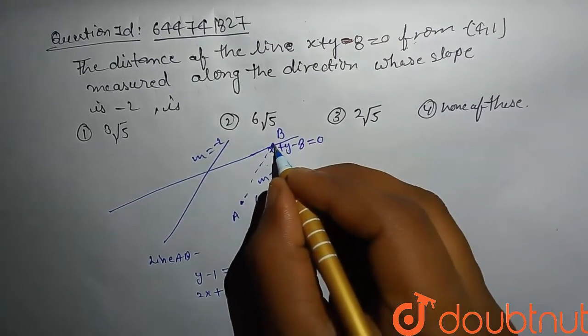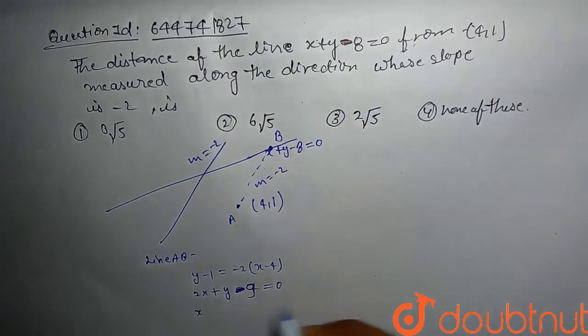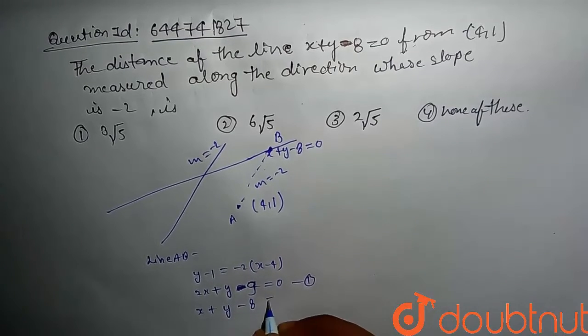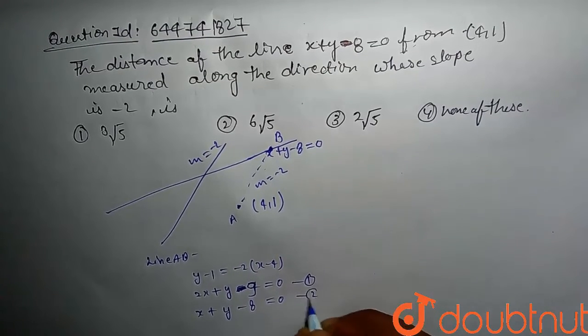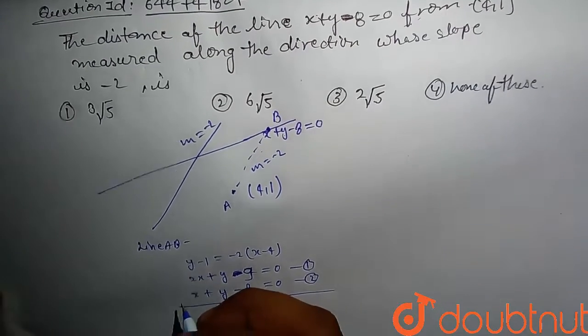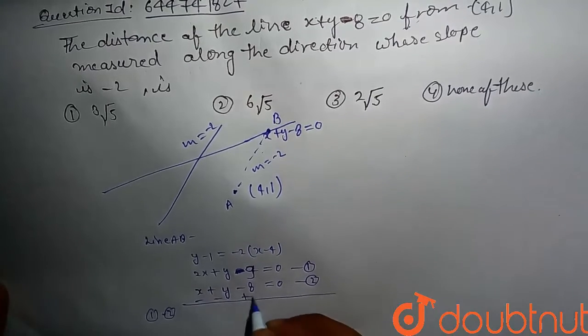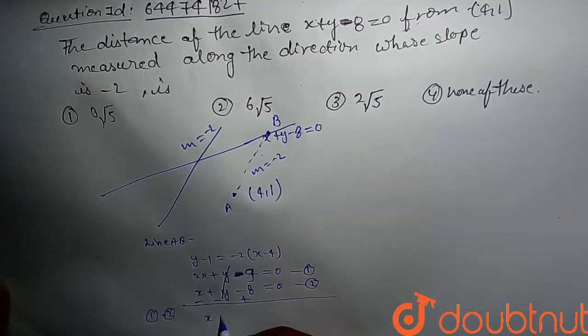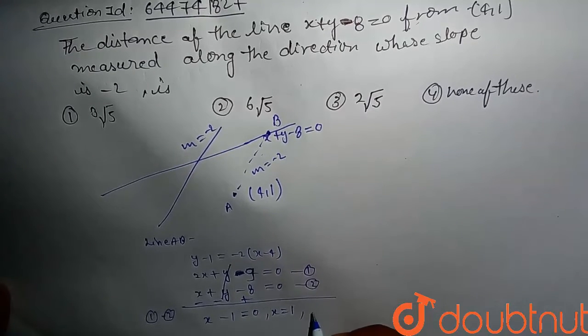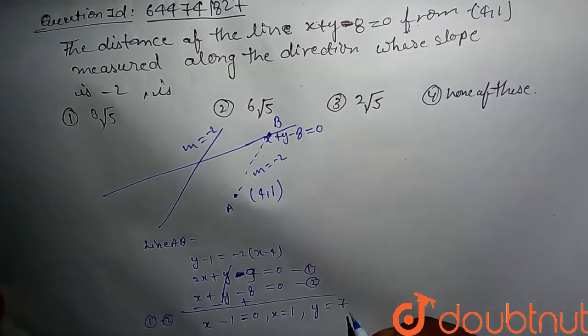We have to compute this point of intersection. We have two equations: 2x plus y minus 7 equals 0, and x plus y minus 8 equals 0. We subtract first minus second: x minus 1 equals 0, means x equals 1 and y equals 7. So point of intersection is (1,7).